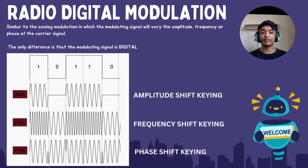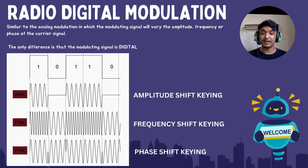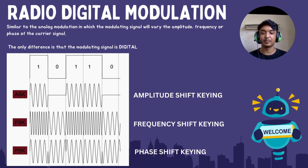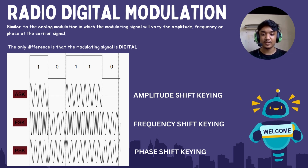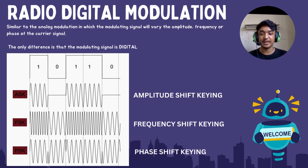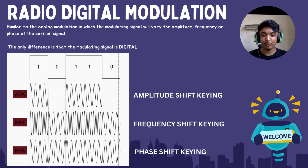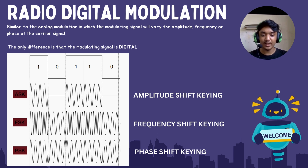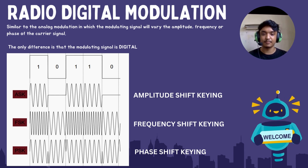Hello, my name is Anthony and now I am going to present on digital modulation. It is similar to analog modulation in which the modulating signal varies the amplitude, frequency, or phase of the carrier signal, but the only difference is that the modulating signal is now digital. For example, for amplitude shift keying (ASK), we see the amplitude shift in the carrier wave converted into digital binary data, either 1 or 0, as shown in the diagram. Same goes for frequency shift keying (FSK) and phase shift keying (PSK).